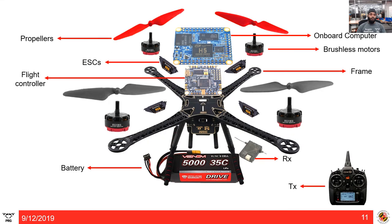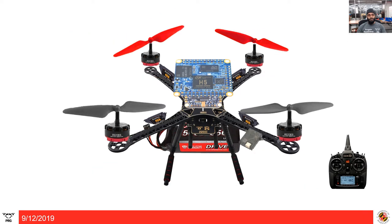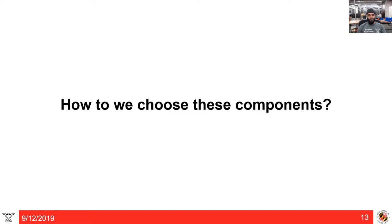So let's see all the components at a glance: we have propellers, ESCs, flight controllers, battery, receiver, transmitter, frame, brushless motors, and the onboard computer. The question is how do we choose these components? Depending on the task for which you are using the quadrotor, you will choose a set of hardware that matches and performs well together.